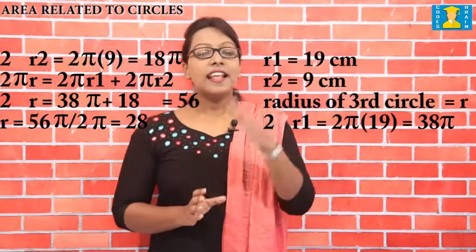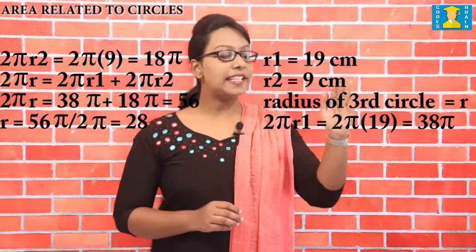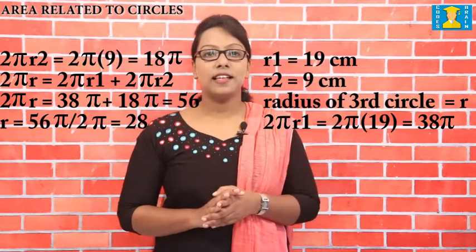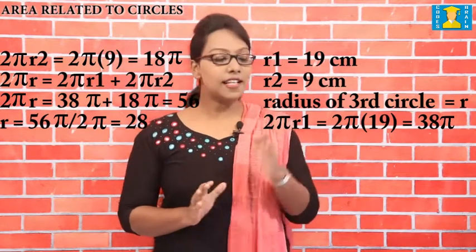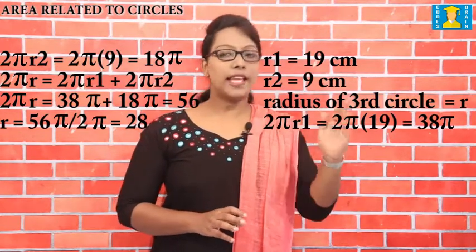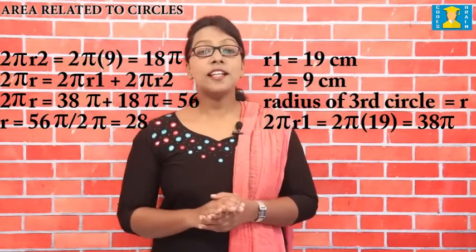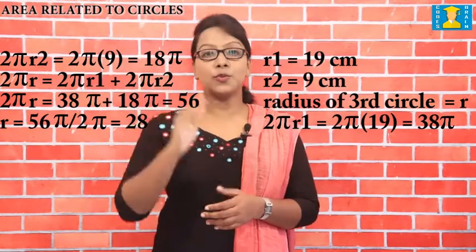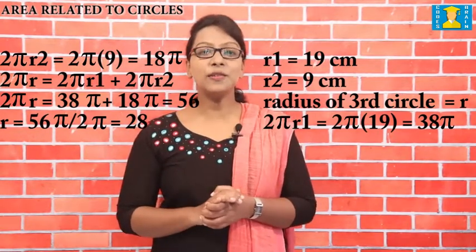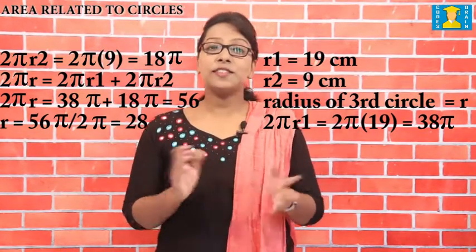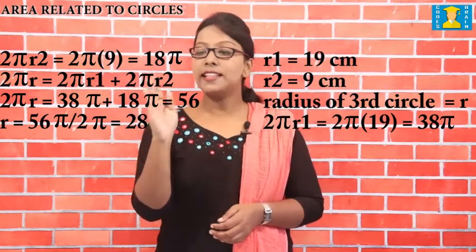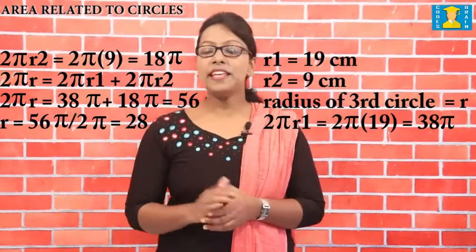Here, radius r1 of the first circle is equal to 19 cm, and radius r2 of the second circle is equal to 9 cm. Let the radius of the third circle be r. The circumference of the first circle is 2πr1 = 2π × 19 = 38π. The circumference of the second circle is 2πr2 = 2π × 9 = 18π. The circumference of the third circle is 2πr. Given that the circumference of the third circle equals the circumference of the first plus the second: 2πr = 38π + 18π = 56π.